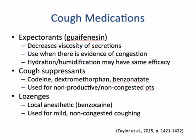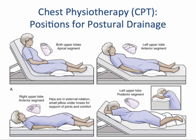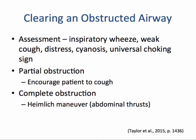Chest physiotherapy includes a group of interventions that promote secretion movement and clearance, including percussion, vibration, and postural drainage. This image shows positions for postural drainage and the particular area of the lung that each position targets. In airway obstruction, you may notice an inspiratory wheeze, a weak cough, distress, cyanosis (a color change to blue), and the universal choking sign.